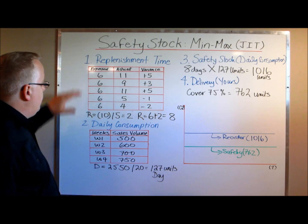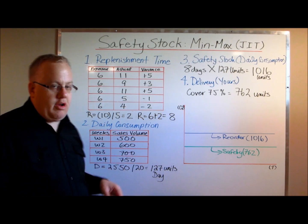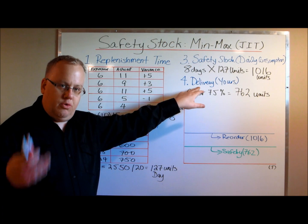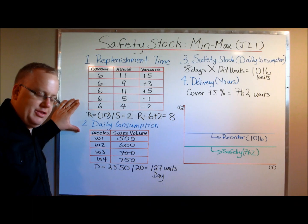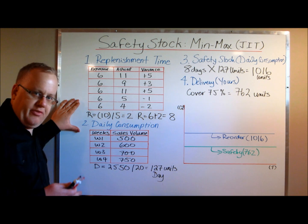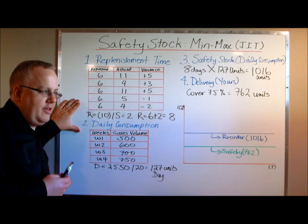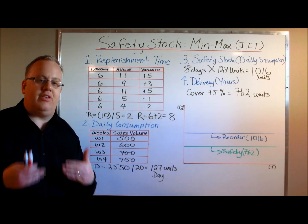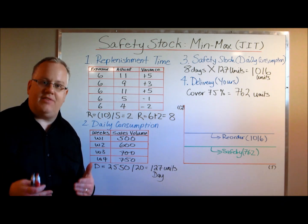I'm going to go over four steps: defining your replenishment time, daily consumption in terms of sales to your customers, safety stock, and your actual delivery to your customers once you generate a sale. Before we get started, there are a lot of very complex calculations out there that account for multiple vendors, failure rates, and all kinds of variables. We're accounting for some of that, but I'm trying to simplify it as much as possible, because it is a relatively simple process that comes from trial and error.